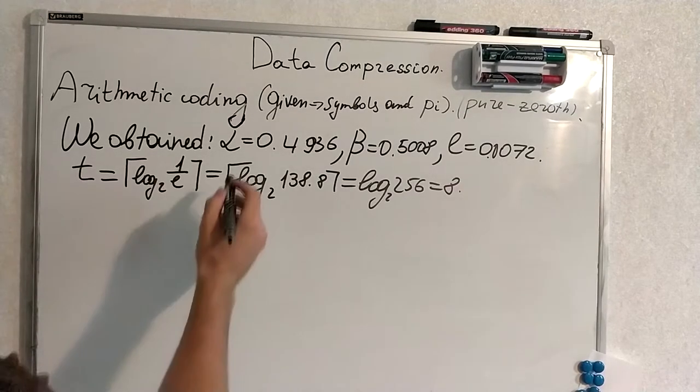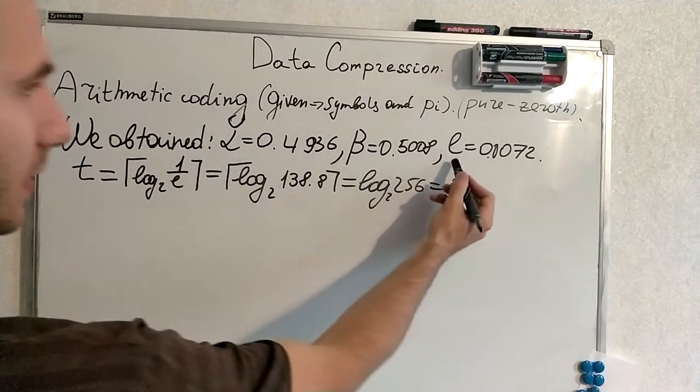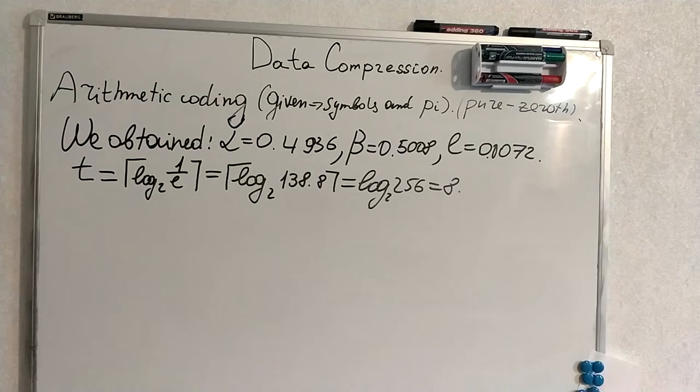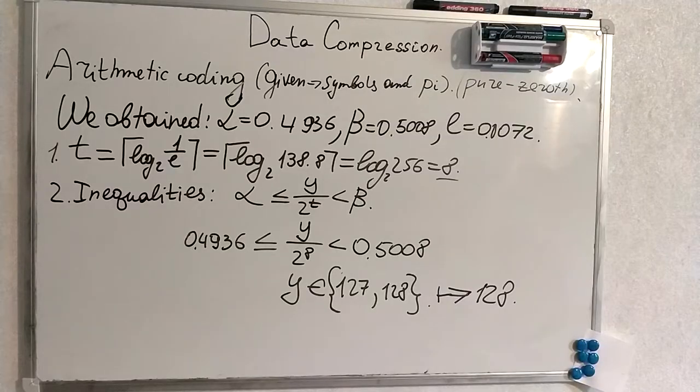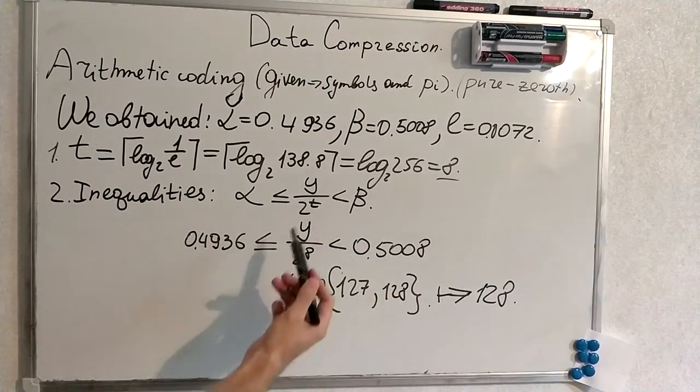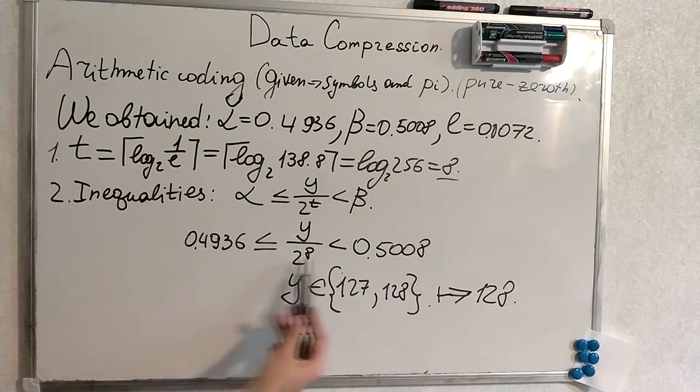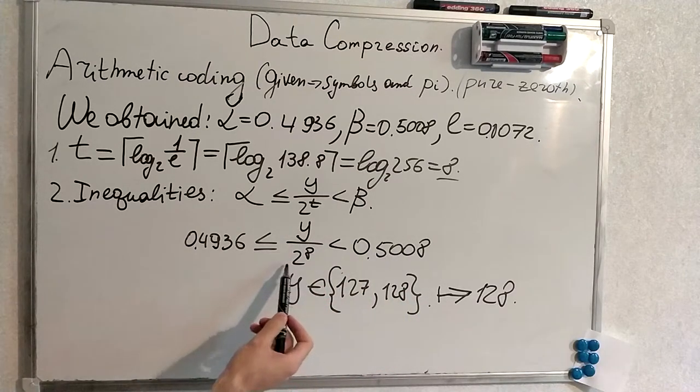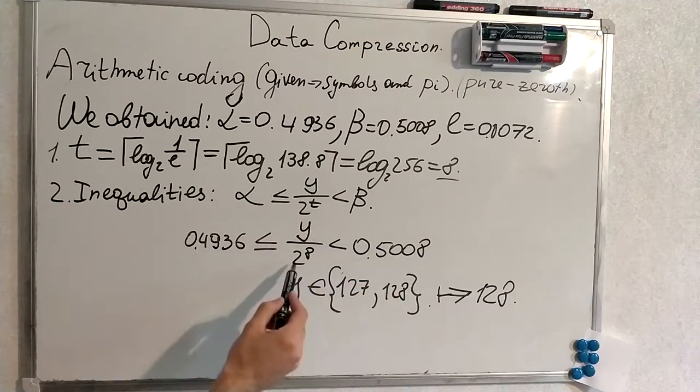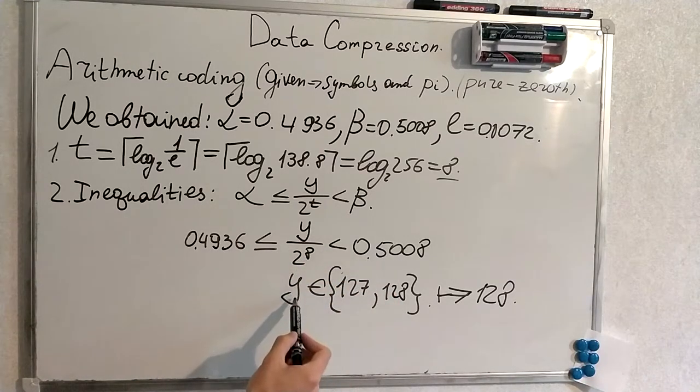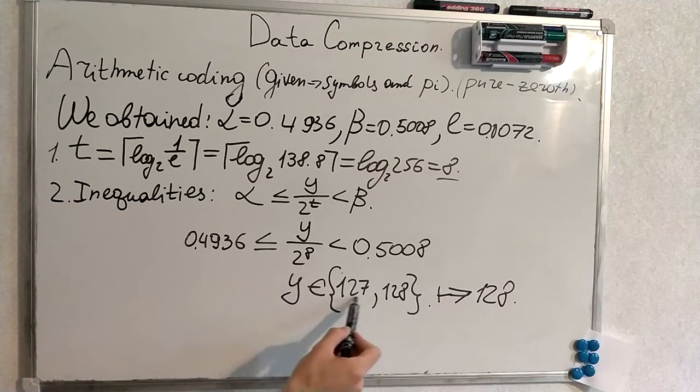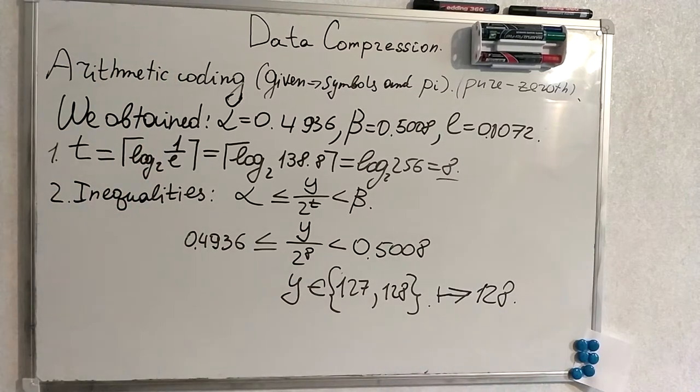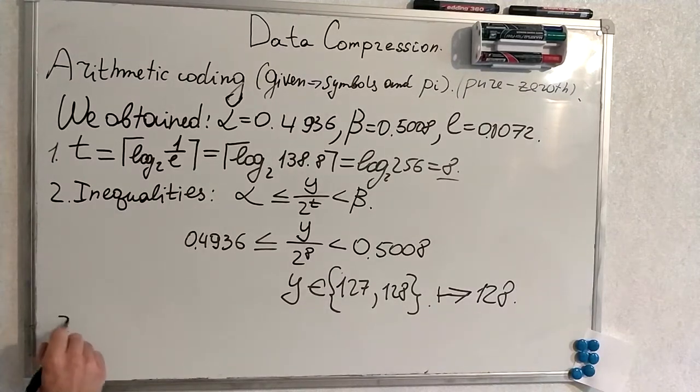From the step with the table, we acquire alpha equals this number, beta this number, and the length of the interval is this very small number. We are computing t according to the formula. And t equals 8. Next we solve the inequality. We know t, we know alpha, we know beta. Thus we know y from here. We just multiply both sides by 2 to the power of 8. Thus we have two answers. We choose 128, not 127. We choose the even one according to the condition. And now we have to just reduce the dyadic fraction.